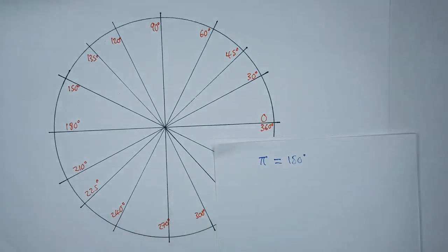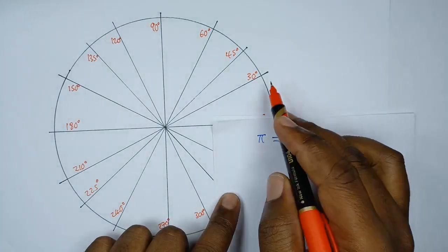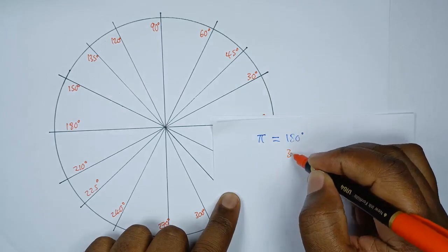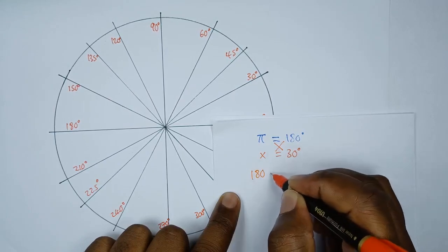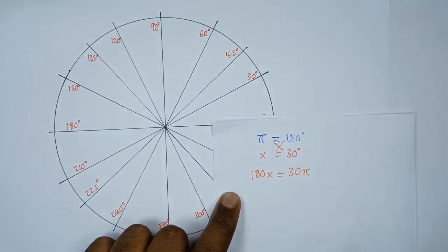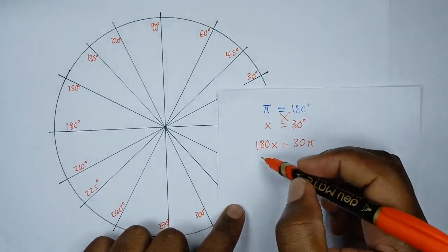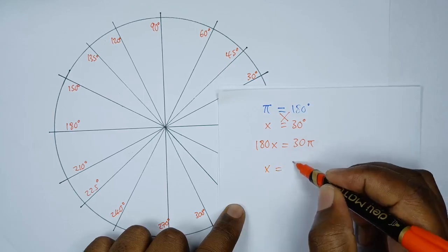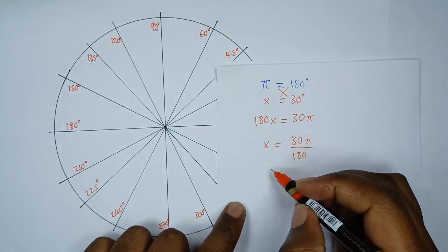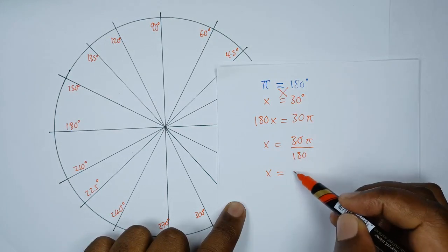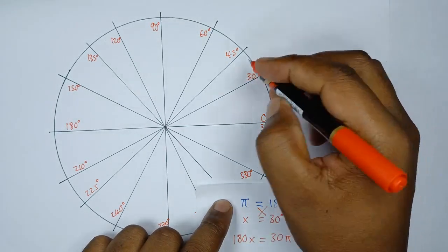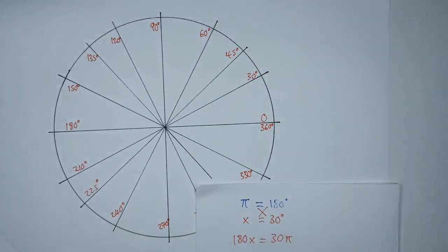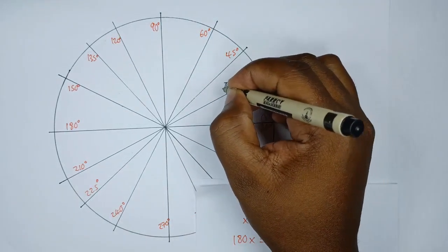Let's do one example — converting 30 degrees into radians. We set up the proportion: 180 corresponds to pi, and 30 corresponds to x. Cross-multiplying gives us 180x equals 30 pi. Dividing both sides by 180, x equals 30 pi over 180, which simplifies to pi over 6. So 30 degrees is equivalent to pi over 6 in radians.